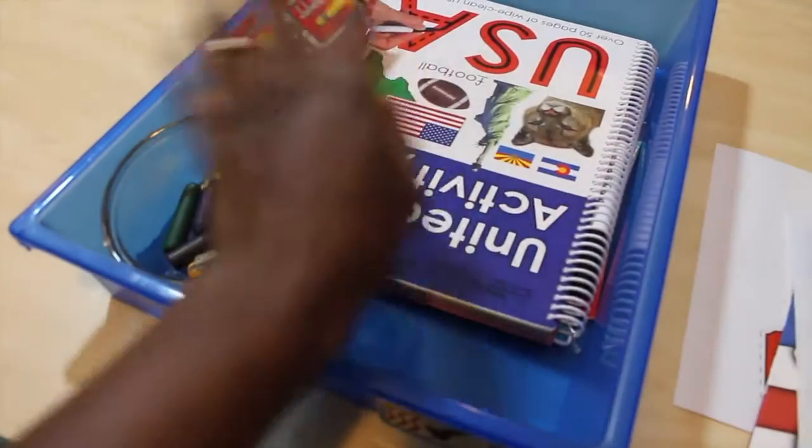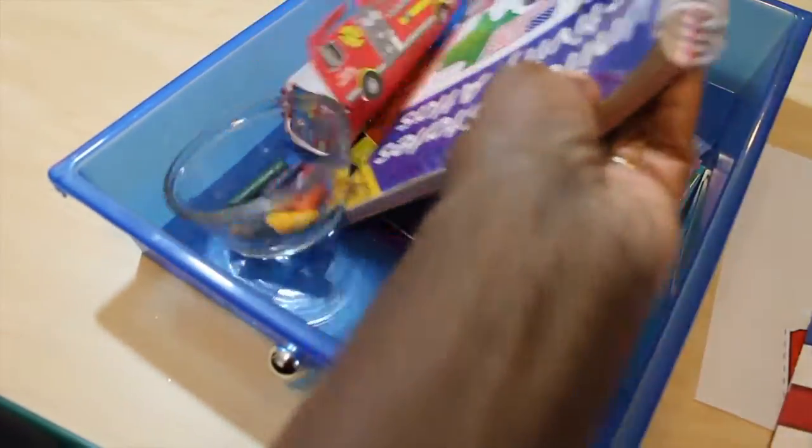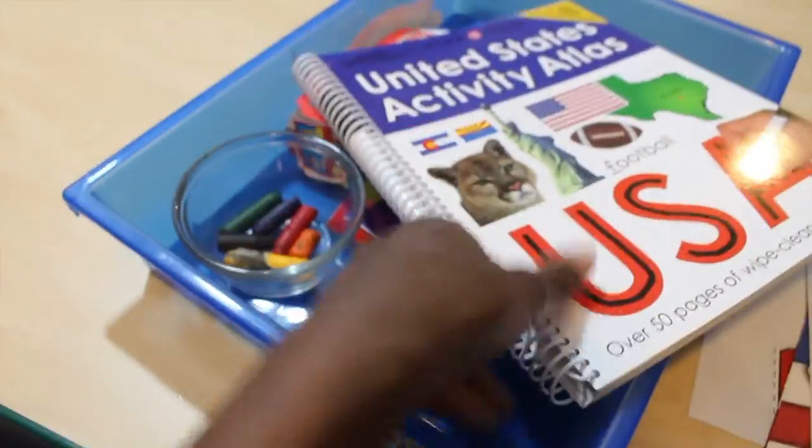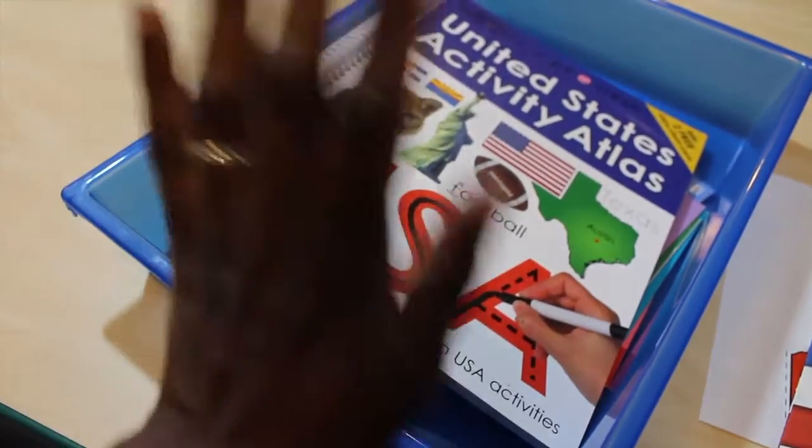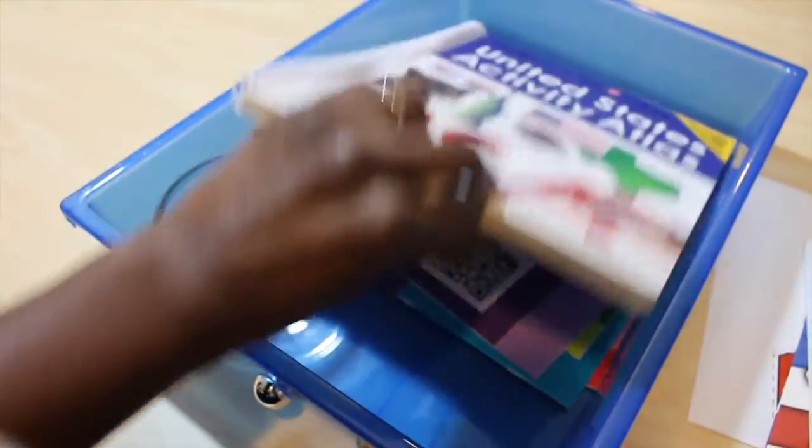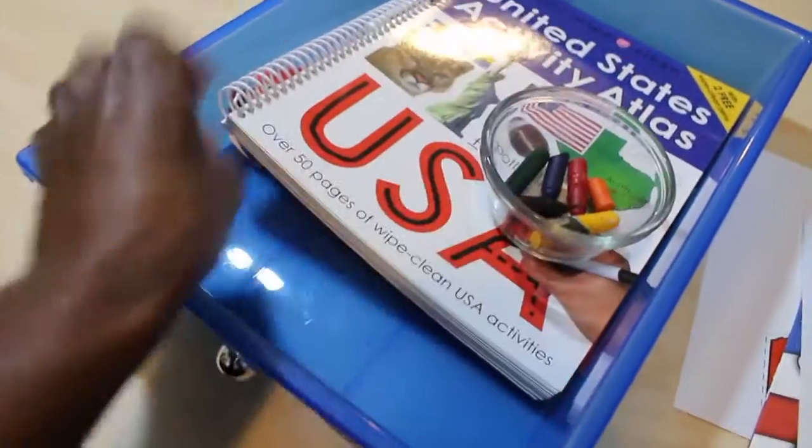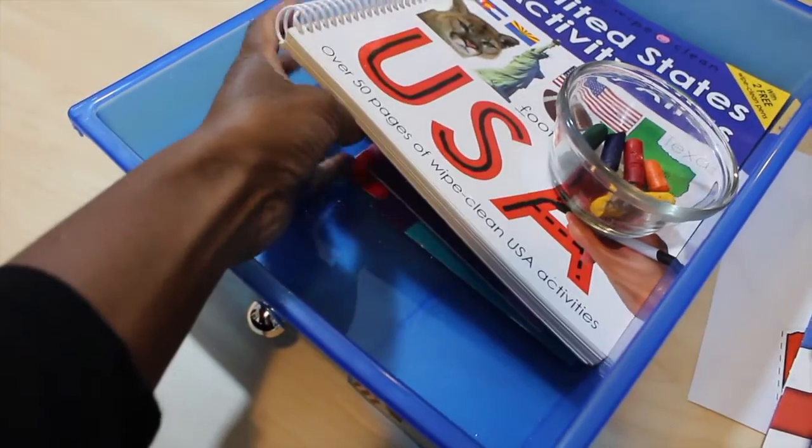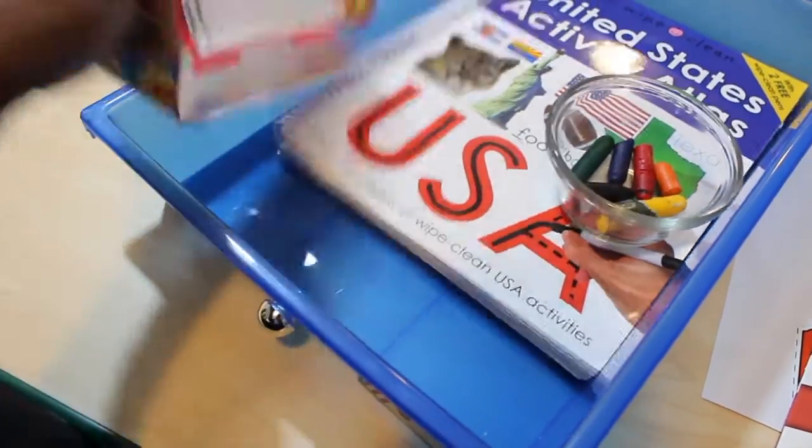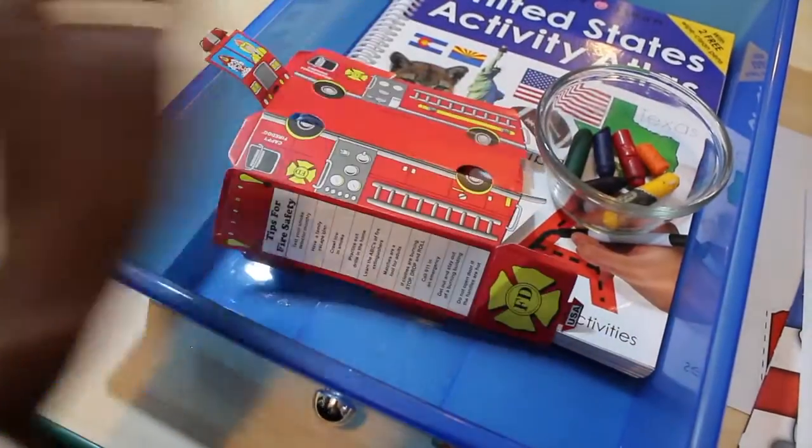And then we go into more detail with each state by using this activity book for the United States. So that's what he has in here. And then some random sight word readers about food groups that sometimes we look at, sometimes we don't because we kind of move on from that. But he likes them. So I keep them here. So that's what he has here in his elective drawer.